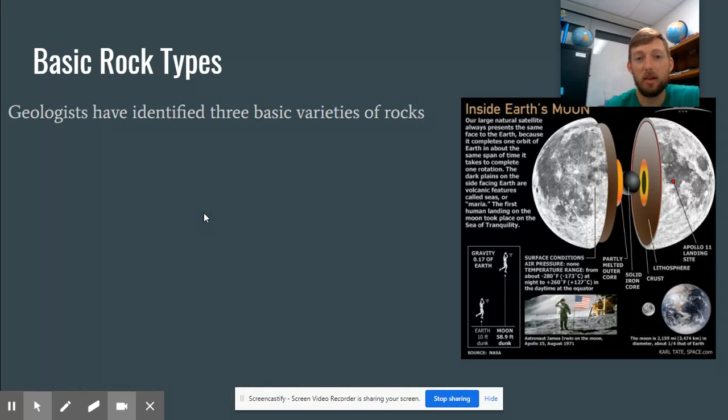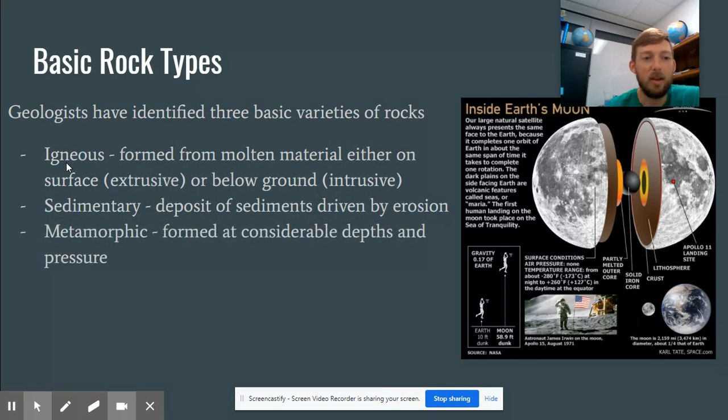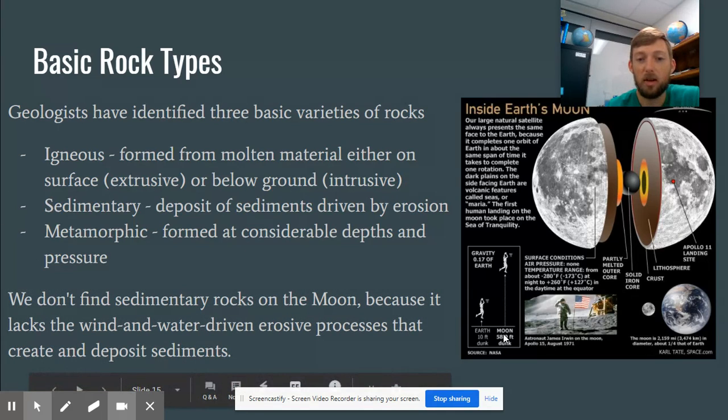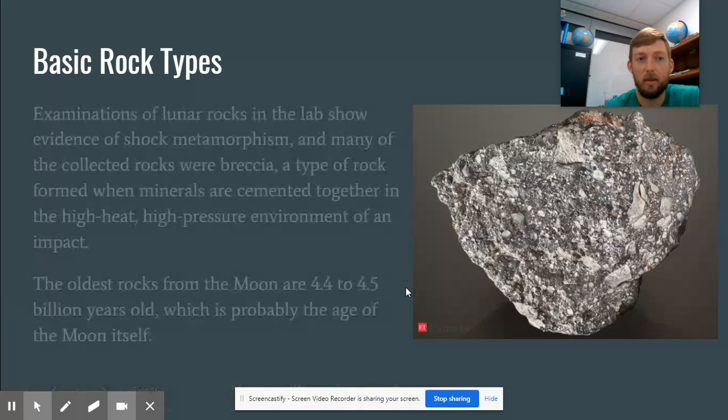Now, in geology, there are some basic rock types. There's a lot of rocks, but the basic ones are igneous, which is formed from molten material either on surface or below ground. And so it's like volcanic rocks. There's sedimentary, which is deposits driven by erosion, so that's with wind and water. And there's metamorphic, formed at considerable depths and pressure, so like coal or diamonds and granite. So thinking about the fact that there's no erosion on the moon, we can probably get rid of sedimentary, because there's not going to be any erosion. There's no water, no rivers depositing material. The sediment that's going to build up over time. And so we don't find any sedimentary rocks on the moon because of that.